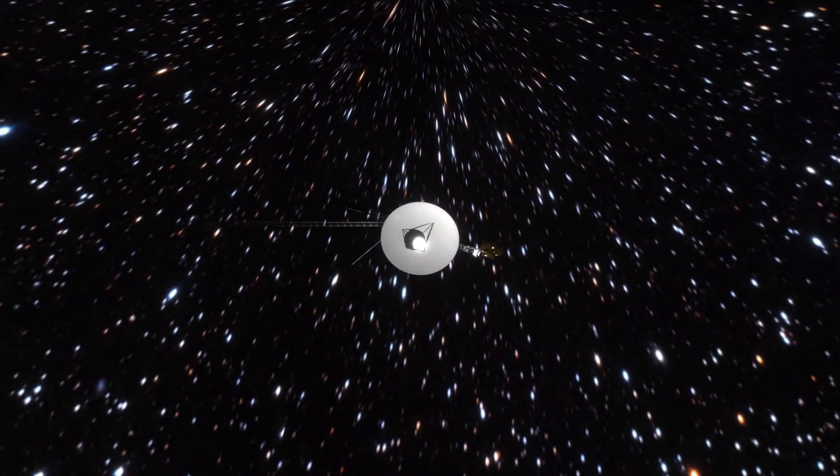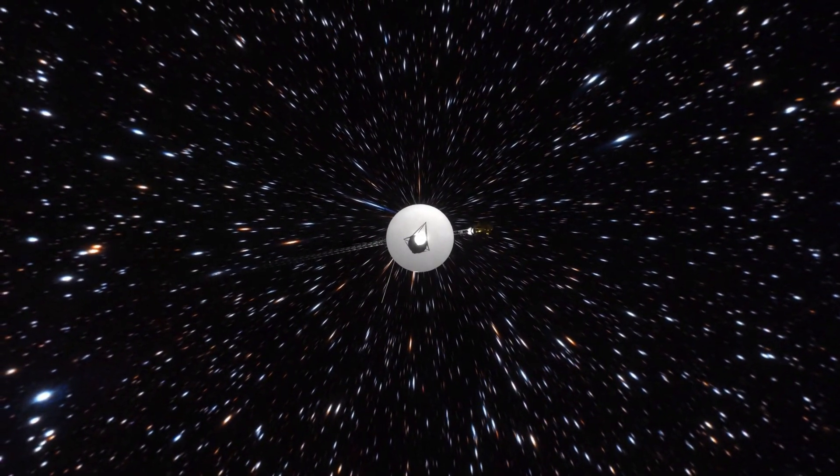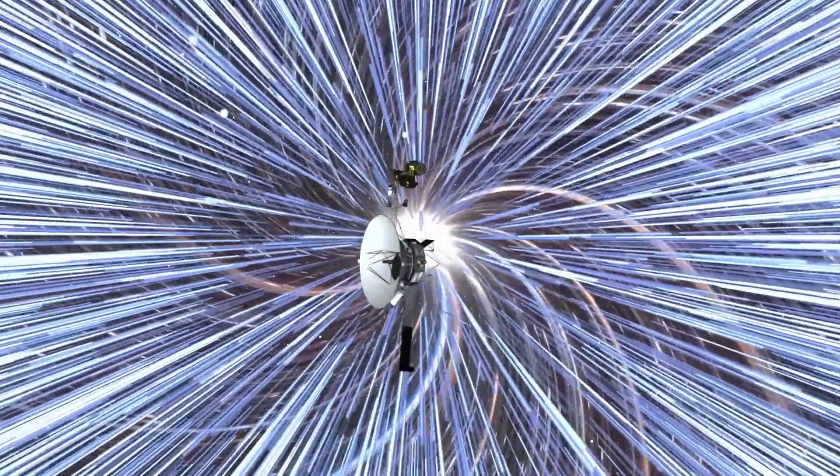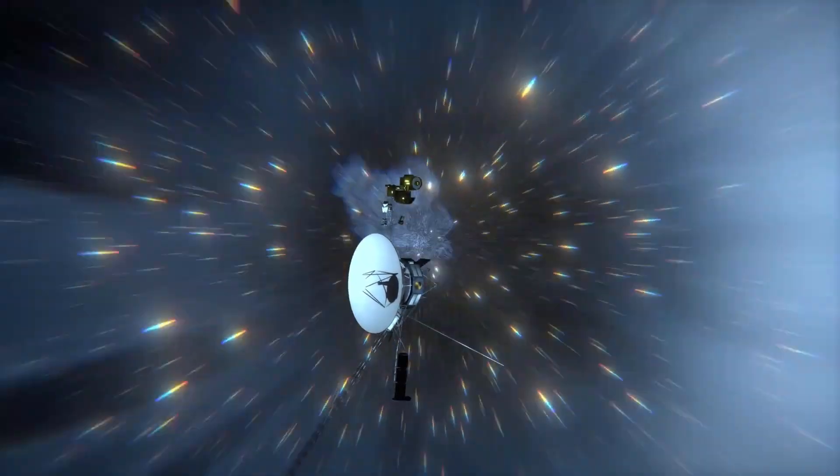But as Voyager 2 sped past Jupiter, then Saturn, Uranus, and finally Neptune, it was clear that the edge of the Heliosphere was much farther away and no one knew exactly when Voyager was going to cross it, or even if it would before Voyager stopped working.